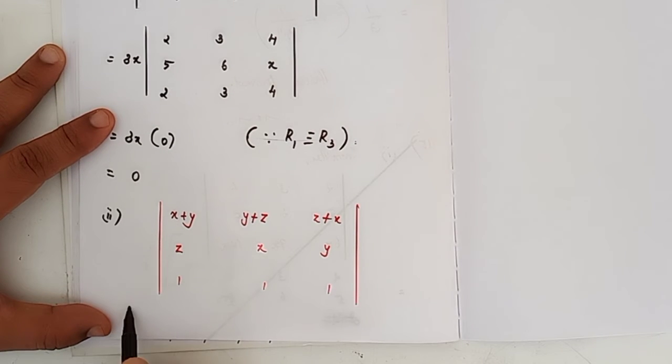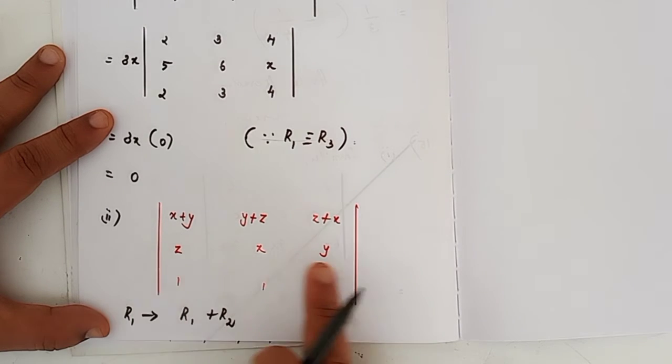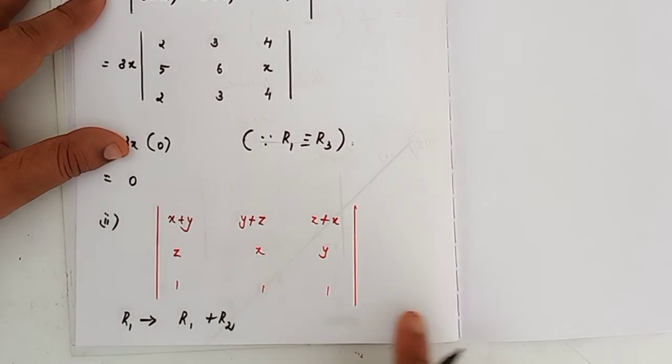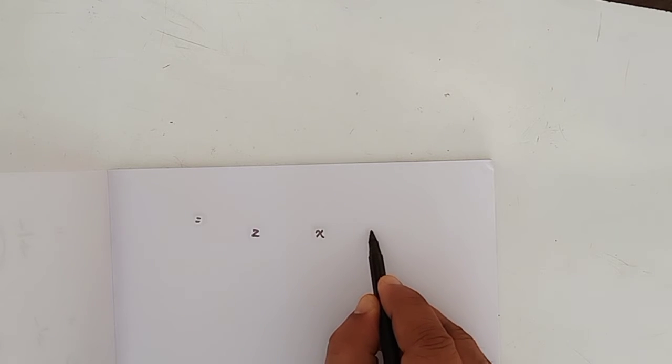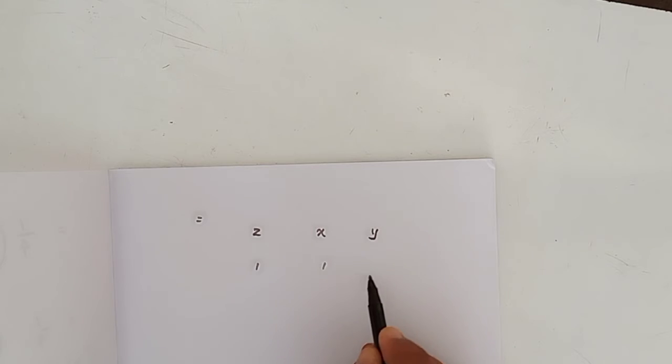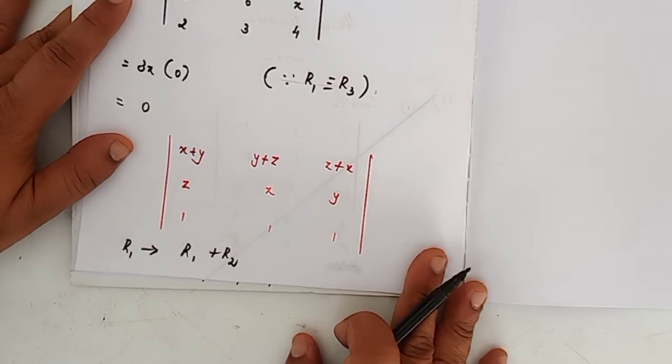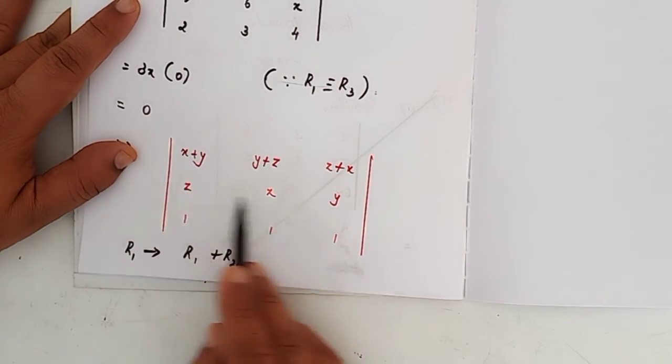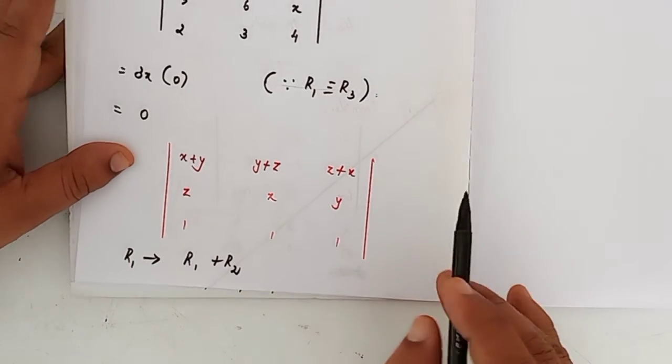I am changing R1. R1 implies R1 plus R2. So no change of R2 and R3, write as it is: zxy, triple 1, zxy and triple 1. Now I am changing that R1. R1 implies R1 plus R2. Look at that. Here we have R1 and R2, add these two: x plus y plus z, x plus y plus z, x plus y plus z.